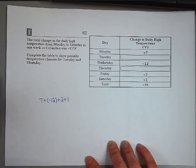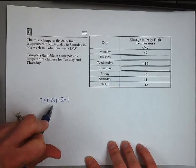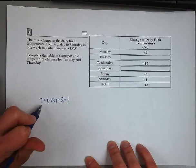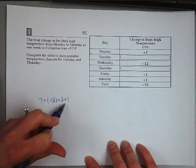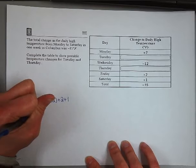It makes sense first to add our positive numbers together because those are easier. Seven plus two gives us nine, plus one gives us ten. So we get ten plus negative twelve.